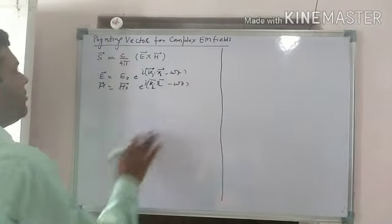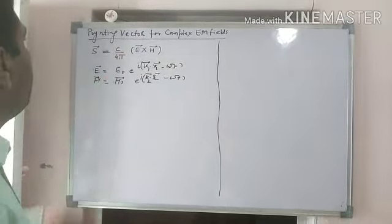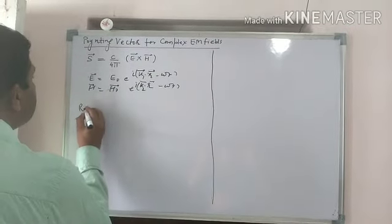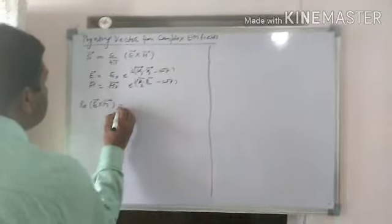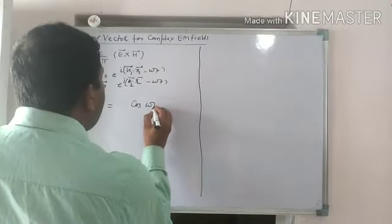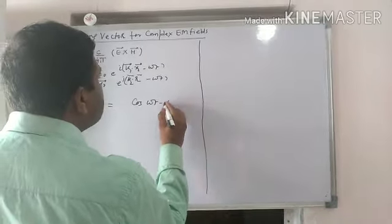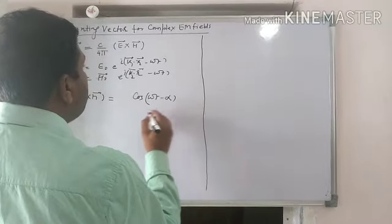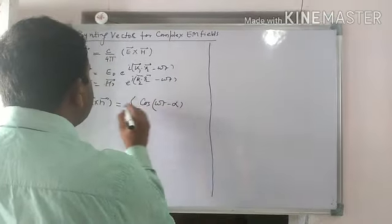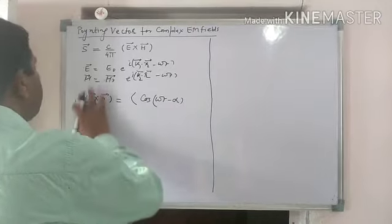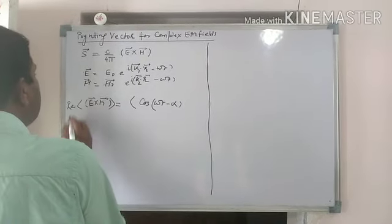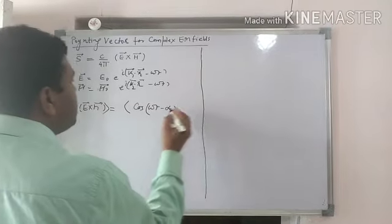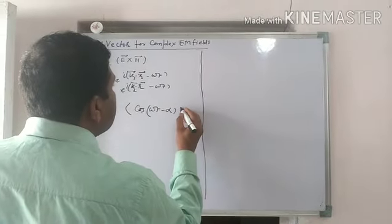So in fact, what we will do, we will start with the real part of these things, E cross H. So what we will have, we will have cos(ωt - α), where α is the phase that this will receive. So let me just write actually the average of this thing and the real. So this is going to be cos(ωt - α).